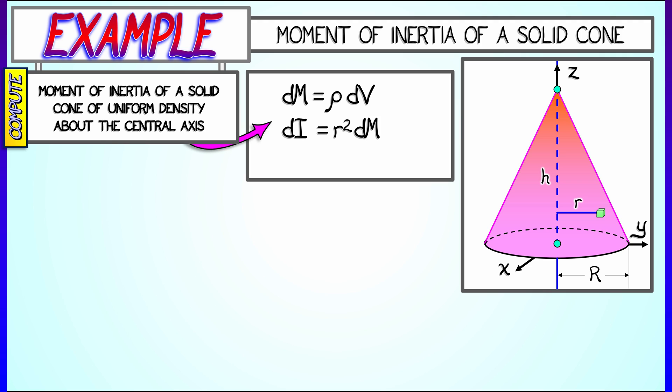The mass element is just a constant rho times the volume element. The Moment of Inertia element is R squared dm, where R is the distance from this mass element to the z-axis. In this case, it depends only on x and y, and R squared equals x squared plus y squared. That's not always the case — you have to figure this out each time. So that's our Moment of Inertia element. The rest is easy, right? All we have to do is integrate.